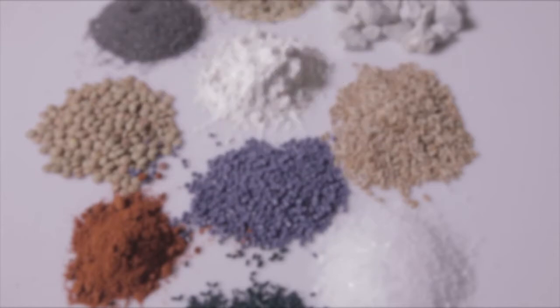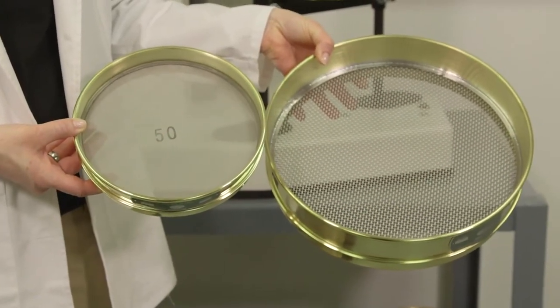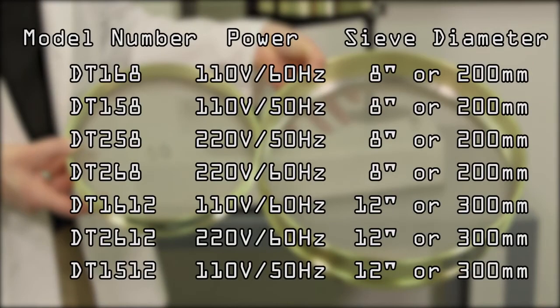ground, granular, or powdered form. The Duratap comes in models that accommodate 8-inch and 12-inch diameter as well as 200mm and 300mm testing sieves.